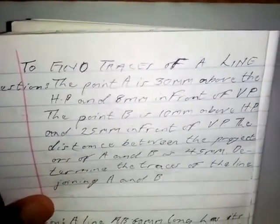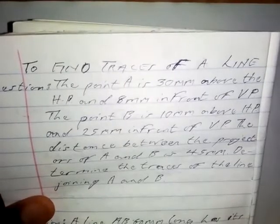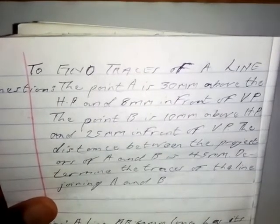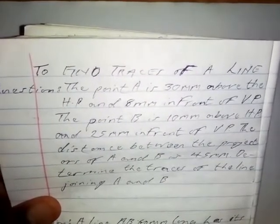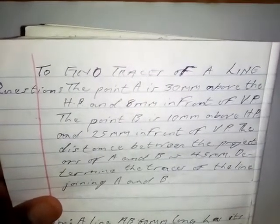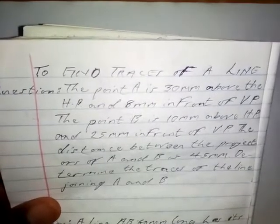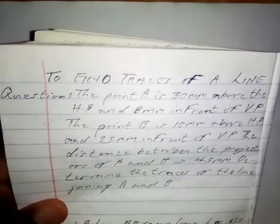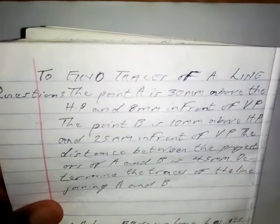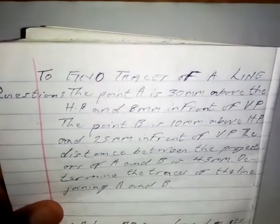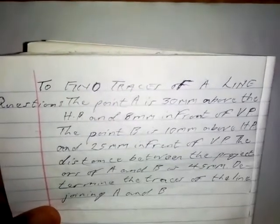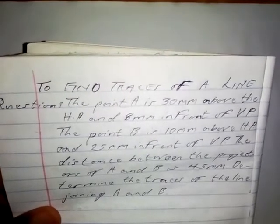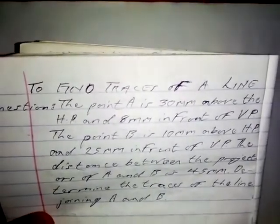After the introduction to traces — in which I said a trace is a point at which a straight line if produced intersects a horizontal plane or vertical plane — and we have two types of traces: horizontal trace and vertical trace. Under projections of straight lines, I now want to show you how to find the traces of a line.